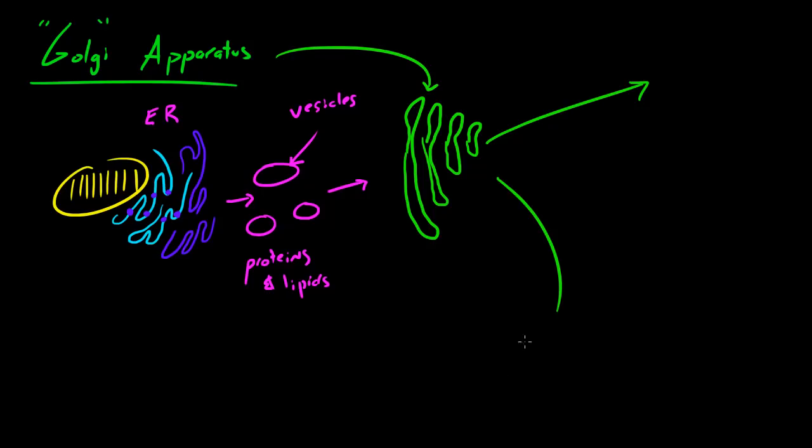Whenever I say tags them for the proper destination, well these proteins and lipids aren't just gonna chill in the Golgi apparatus and stay there forever. They're going to different parts of the body, maybe different parts of the cell wherever they're needed. So what the Golgi apparatus does is it basically acts as a post office. Whenever it receives stuff, it packages it up into another vesicle and then it ships them out to the proper destination.